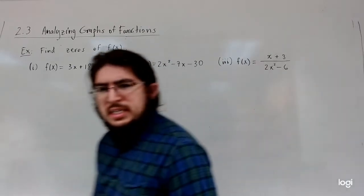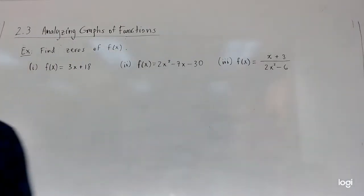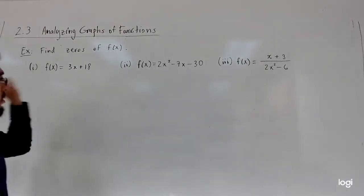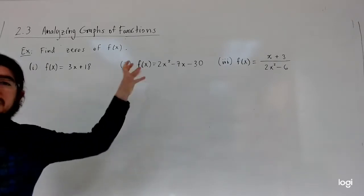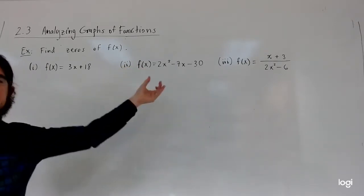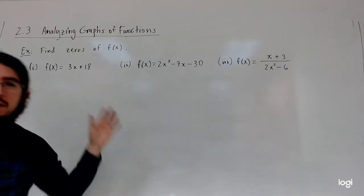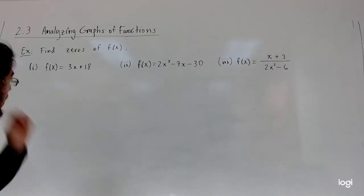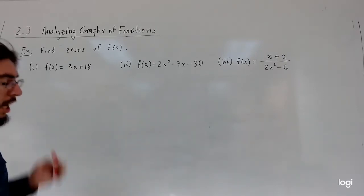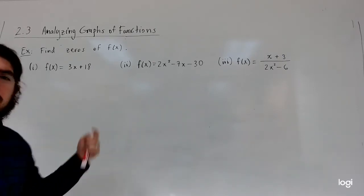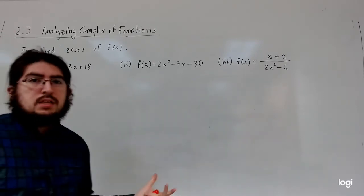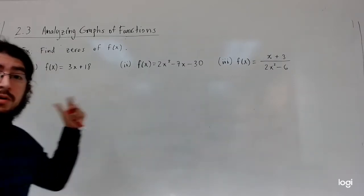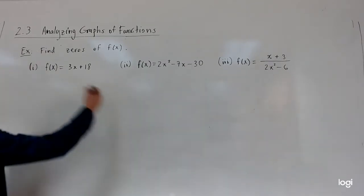So I've come up with these examples for finding zeros of a particular function f of x. I'm labeling all of these functions as f of x, but it could be g of x, h of x — just whatever the name is. How do we find the zeros? We're going to find the x-intercepts by setting f of x equal to zero and solving for x.